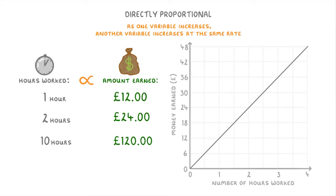If we label our axes with hours worked and money earned, we can see that one hour corresponds to £12, two hours corresponds to £24, and so on.